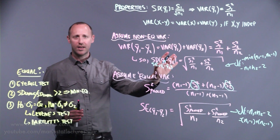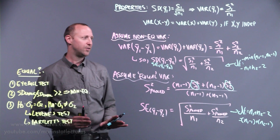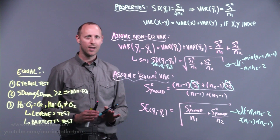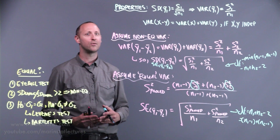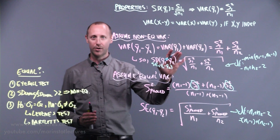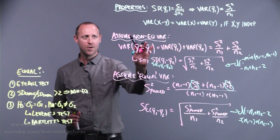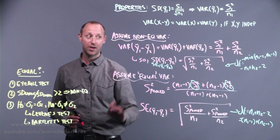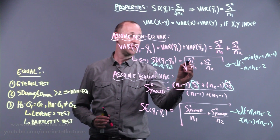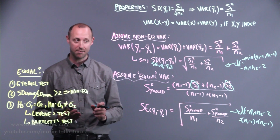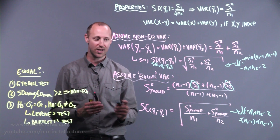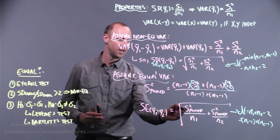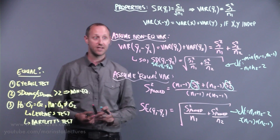We don't want to get too distracted on the exact degrees of freedom — software can handle that. What we want to stay focused on is the conceptual difference: if we assume equal variance, the two estimates are treated as estimates of the same thing, and we can take a weighted average to get a more reliable pooled estimate to use in computing the standard error.